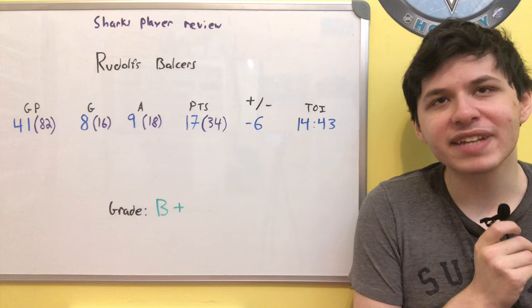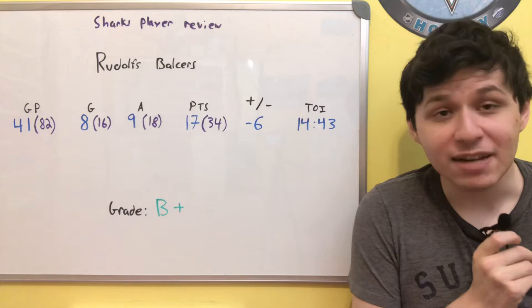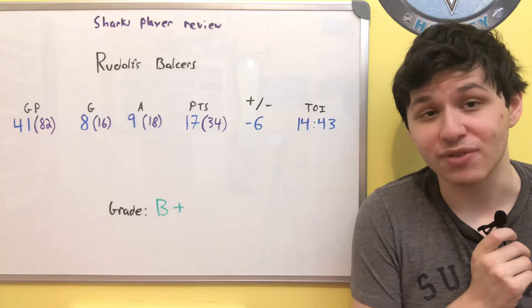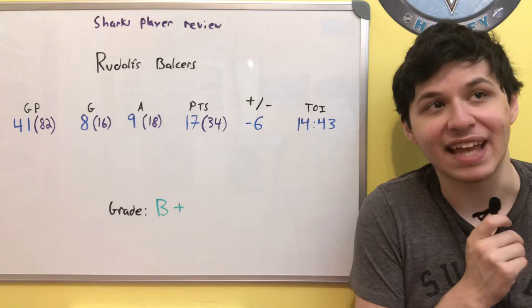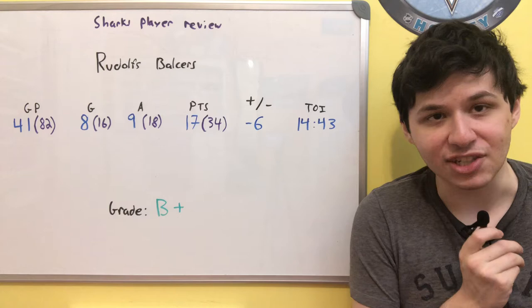Now, Balcers came into the season in a weird situation. The Sharks once had Balcers in their system. He was a Sharks draft pick a few years ago in the 2015 draft, drafted in the fifth round. And he had panned out to be a pretty solid player at the AHL level. But it seemed as though that was all he was going to end up being, just an AHL kind of player. One of those players who was too good for the AHL, but not good enough for the NHL.